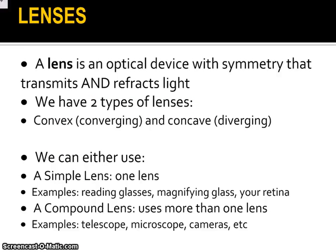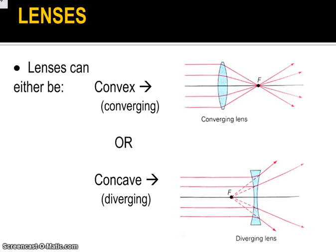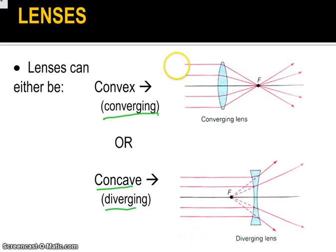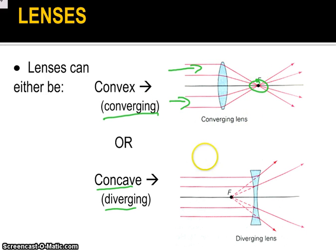Lenses are another way light can interact with its environment. We really have two types: convex lenses, also called converging lenses, and concave lenses, also called diverging lenses. In a convex lens it takes all of the light rays and focuses them onto one point, producing an image. In a diverging lens, the light rays are actually spread apart, but they produce an image on the other side — what we call a false image.